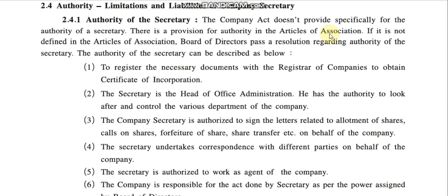Now, what kind of authorities can be described? First: to register the necessary documents with the Registrar of Companies, to obtain the certificate of incorporation, and to maintain the documentation and processes of the organization. A certificate of incorporation is a certificate which is needed for every joint stock company to start the business. Second: the secretary is the head of office administration and has the authority to look after and control the various departments of the company.